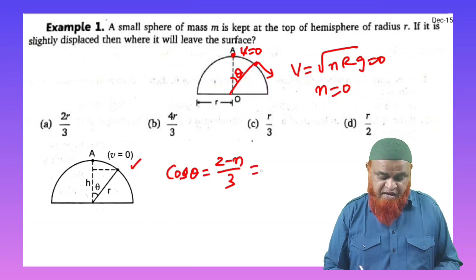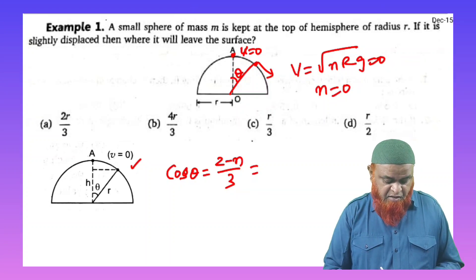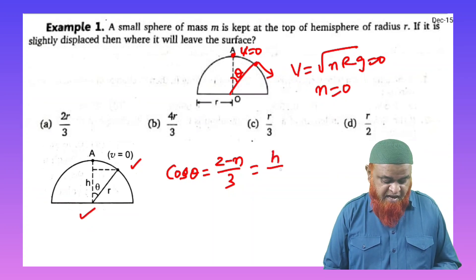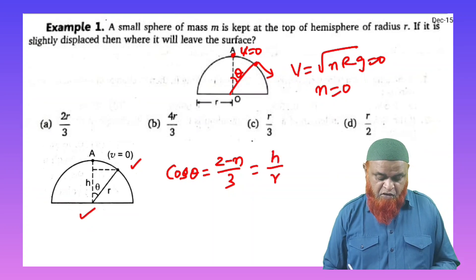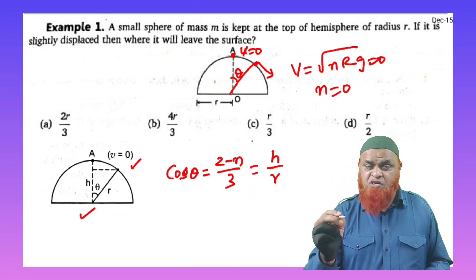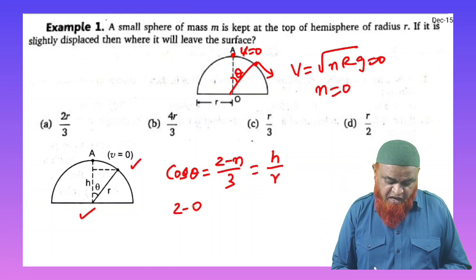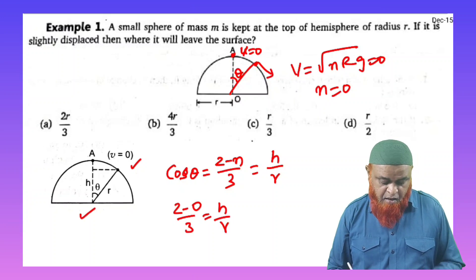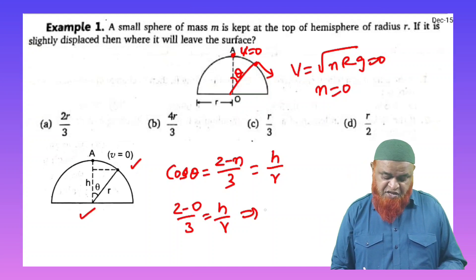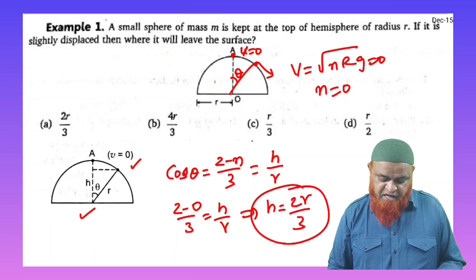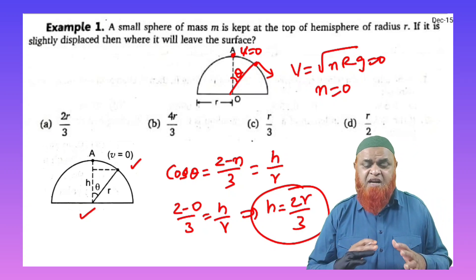So cos theta equals 2 minus n by 3, which is nothing but according to this diagram given here, we can write cos theta equals adjacent side by hypotenuse, that is h by r. As v equals 0, n is also going to be 0 here. So we can write 2 minus 0 by 3 equals h by r. Then what is h here? This implies that h is going to be 2r by 3. That's it. You got the answer in just a fraction of seconds.